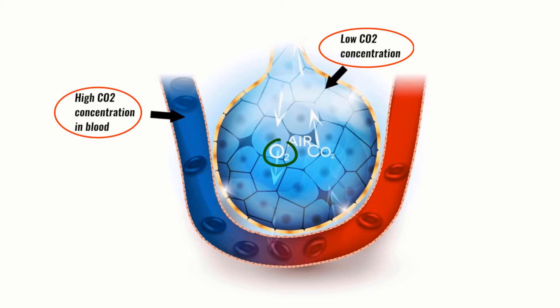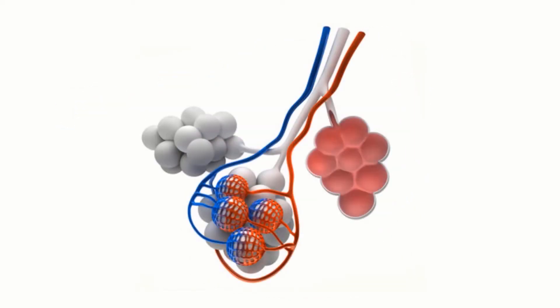Oxygen diffuses from the alveoli into the blood and carbon dioxide diffuses from the blood into the alveoli. However, the lungs are far overbuilt to do their job and the human body contains much more lung tissue than is actually needed for life. Thus, some alveoli are not ventilated, meaning they do not receive an air supply, and the alveoli collapse. Blood flow is diverted from these collapsed alveoli and this region of the lung is basically unused.